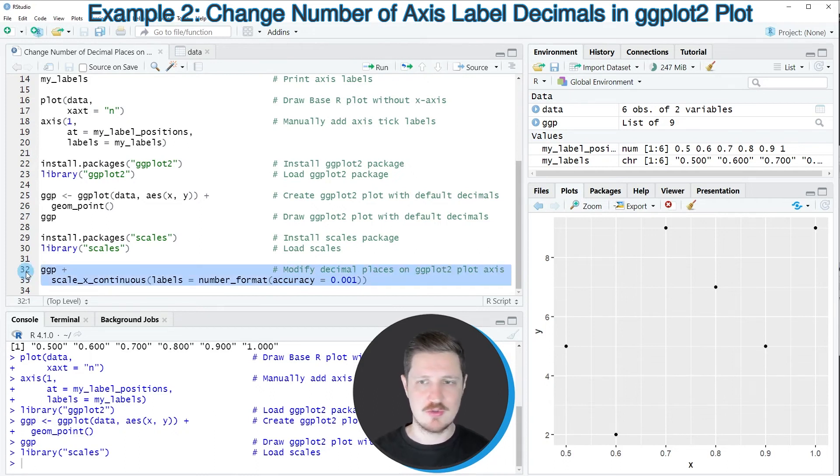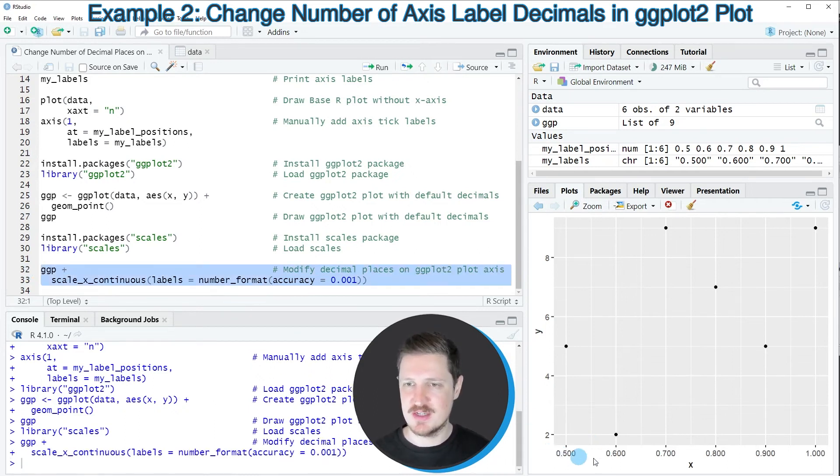So after running these lines of code, our plot is updated. And as you can see, we have changed the decimal places to three decimal places.